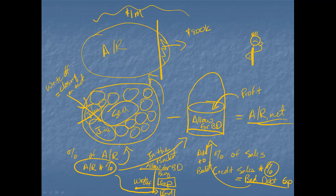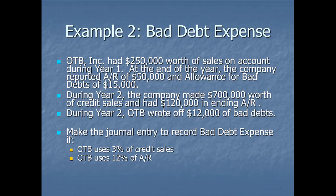Here's our information about OOTB Incorporated. They had $250,000 worth of sales on account during year one. At the end of the year, the company reported account receivable of $50,000 and allowance for bad debts of $15,000. So even though we have $50,000 worth of receivables, we think we're only going to get $35,000. That's that $50,000 minus the $15,000.